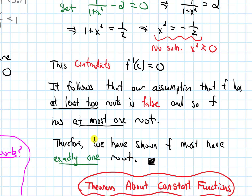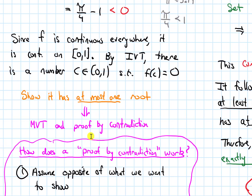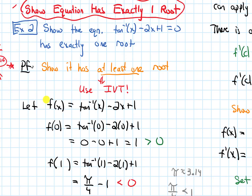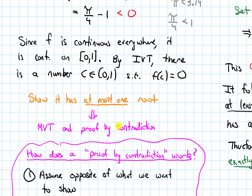As a final summary comment: in general, if you need to show an equation has exactly one root or exactly one solution, approach it in two steps. First, show it has at least one root or solution using IVT. Then show it has at most one root or solution, which involves proof by contradiction and the Mean Value Theorem.